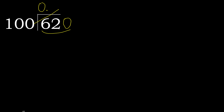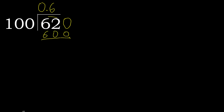100 multiplied by which number is nearest to 620 but not greater? 100 multiplied by 7 is 700, which is greater. Multiplied by 6 is 600, which is not greater. OK, subtract. Next.